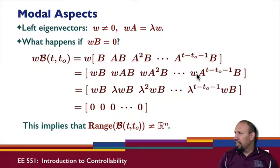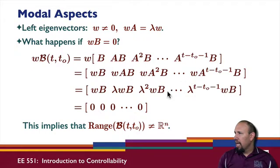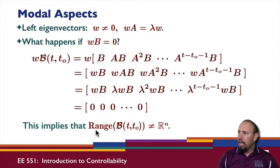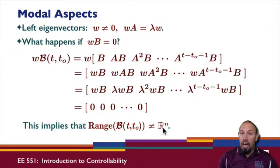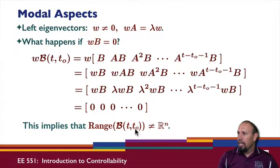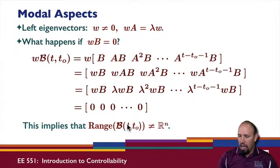Continuing, this gives lambda to the T minus T0 minus 1 times W. So if WB equals zero, notice that each term in the control map has WB in it, and so the whole thing is zero. This implies that the range of the control map is not all of R^n. If I have a non-zero left null space, that proves that the range of the matrix is not all of R^n.